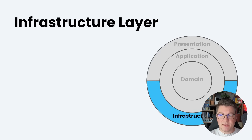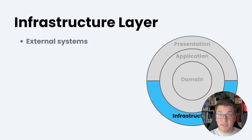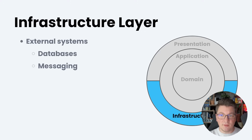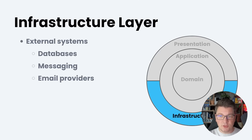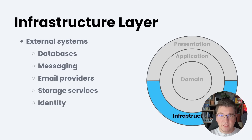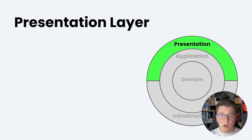The next layer is the infrastructure layer, which is responsible for interacting with the external systems that our application needs to function correctly. These could be databases, messaging components like RabbitMQ or AWS Simple Queue Service, email providers like MailChimp, storage services like Azure Blob Storage or S3, identity providers like KeyCloak or Auth0, and even something trivial like the system clock.